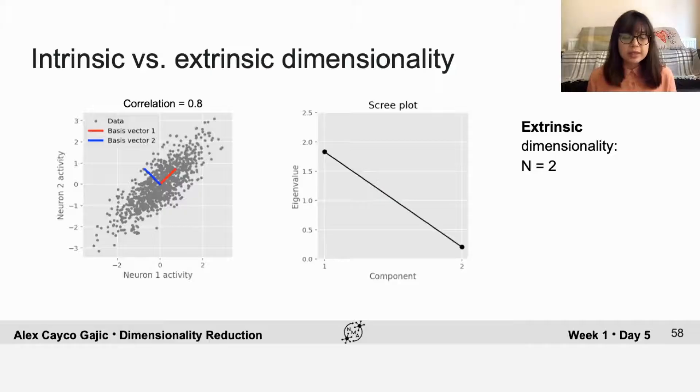This is a much more difficult case to determine because we may not be sure if that second component is reflecting some interesting feature or if it's just reflecting measurement noise in the data. So here, without any additional information, the intrinsic dimensionality could be one, it could be two, it could be something in between, but it's not so clear cut.